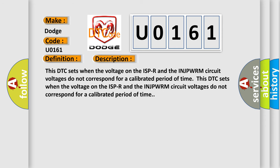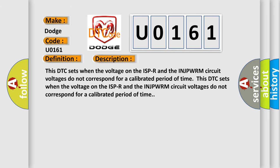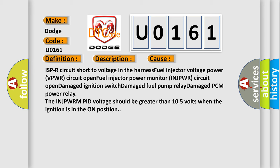This DTC sets when the voltage on the ISPR and the INJPWRM circuit voltages do not correspond for a calibrated period of time. This diagnostic error occurs most often in these cases: ISPR circuit short to voltage in the harness, fuel injector voltage power (VPWR) circuit open, fuel injector power monitor (INJPWR) circuit open, damage to the ignition switch, damage to the fuel pump relay, damage to the PCM power relay. The INJPWRM pit voltage should be greater than 10.5 volts when the ignition is in the on position.